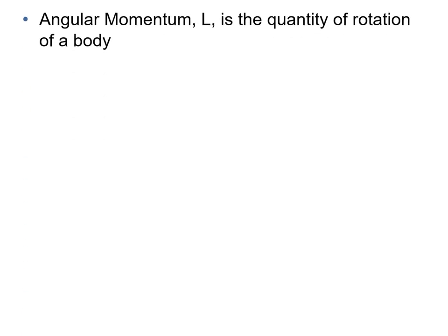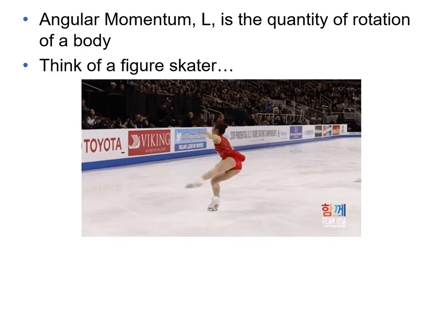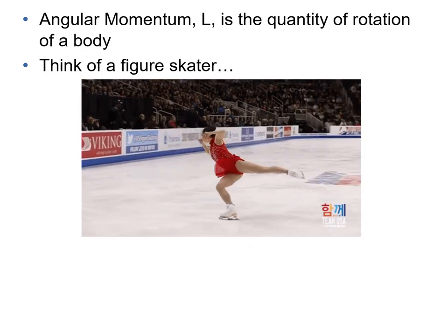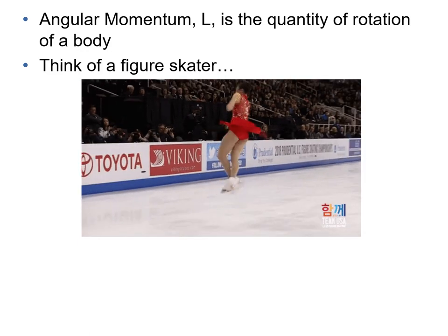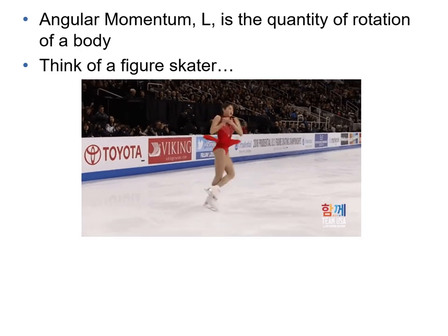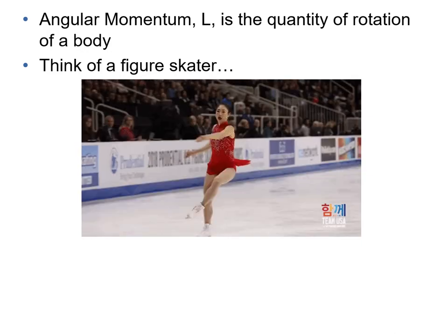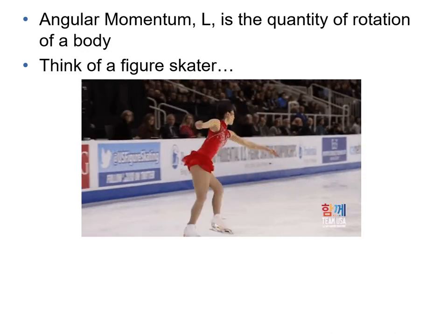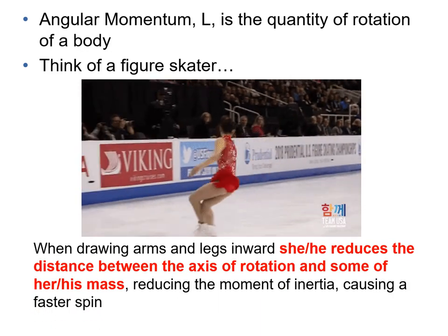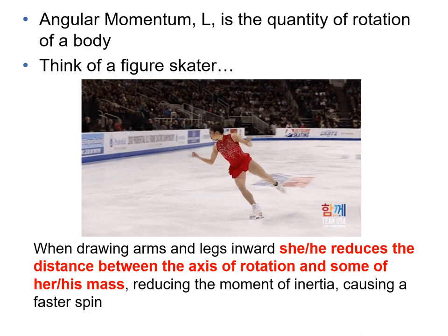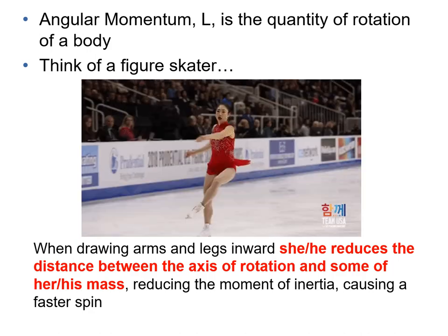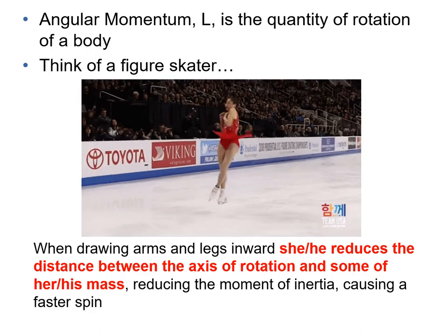Angular momentum L is a quantity of rotation of a body. Think about a figure skater. Watch her arms. When they're spread out, she's moving slower. When she brings her arms and legs in closer to her center of gravity or center of mass or axis, then she spins faster because her moment of inertia is smaller. When drawing arms and legs inward, she reduces the distance between the axis of rotation and some of her mass, which reduces the moment of inertia, causing a faster spin.